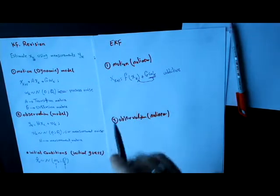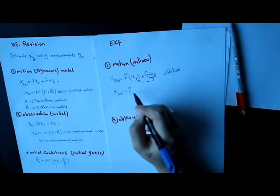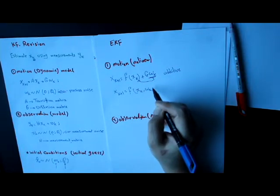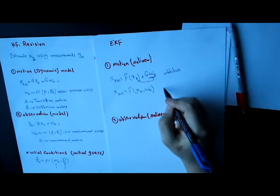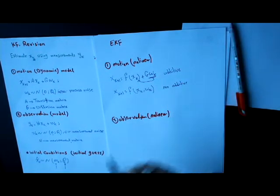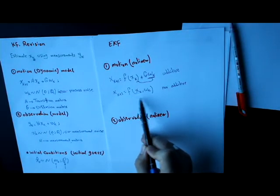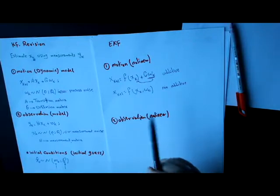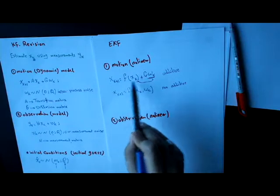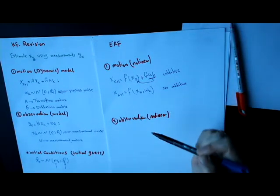If I write the model so that the noise component is a part of the motion model function, it will be called a non-additive nonlinear model. Actually, this additive form is the most popular way to describe the motion model, and this is the way I will use in this video.